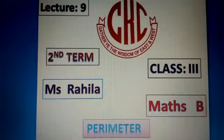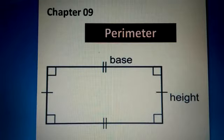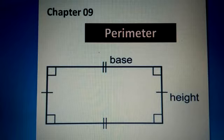Assalamu alaikum class. Today is our ninth lecture of Maths B, which is about the perimeter. In this lecture, we will discuss the perimeters of different shapes. First of all, we will discuss what the meaning of perimeter is.